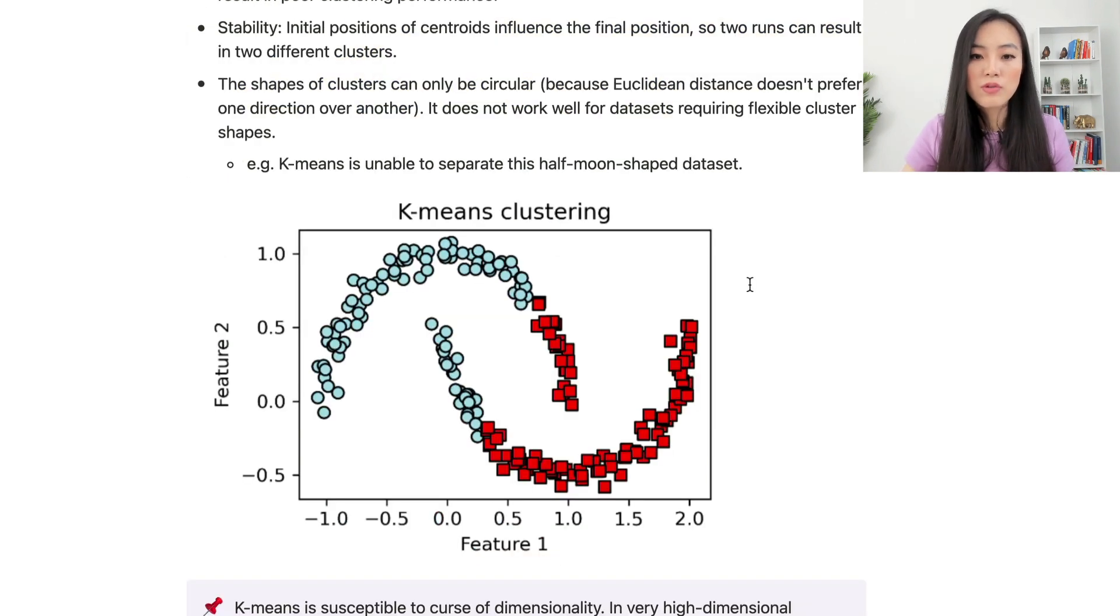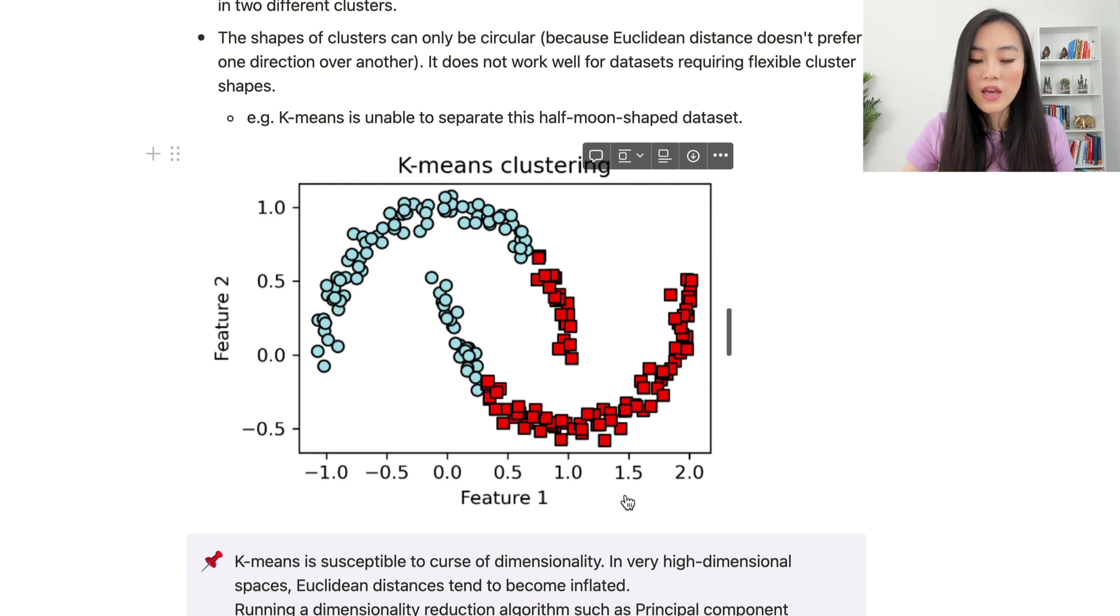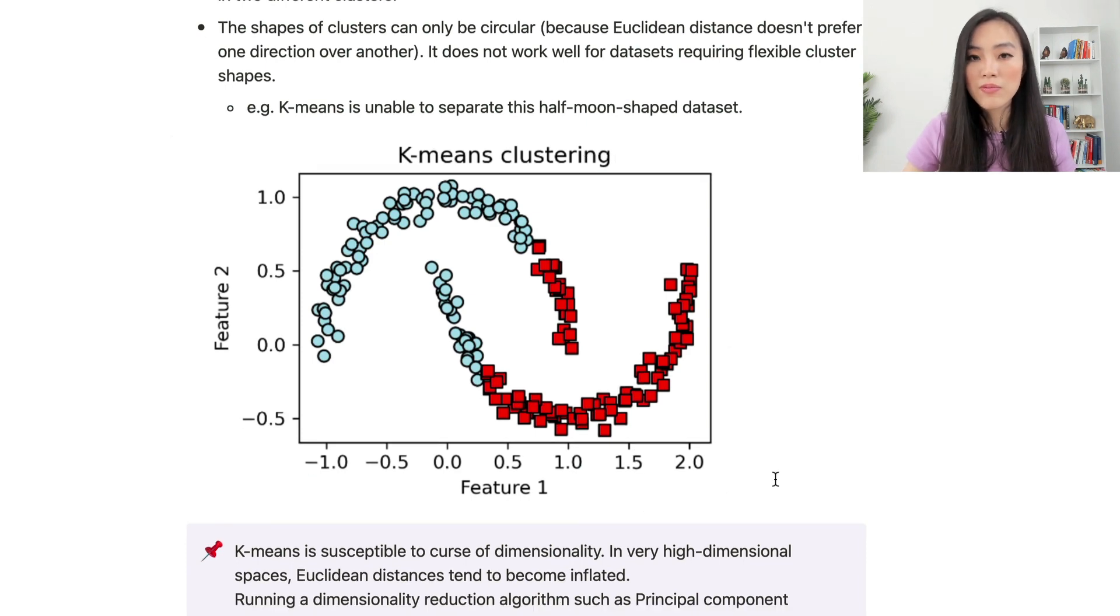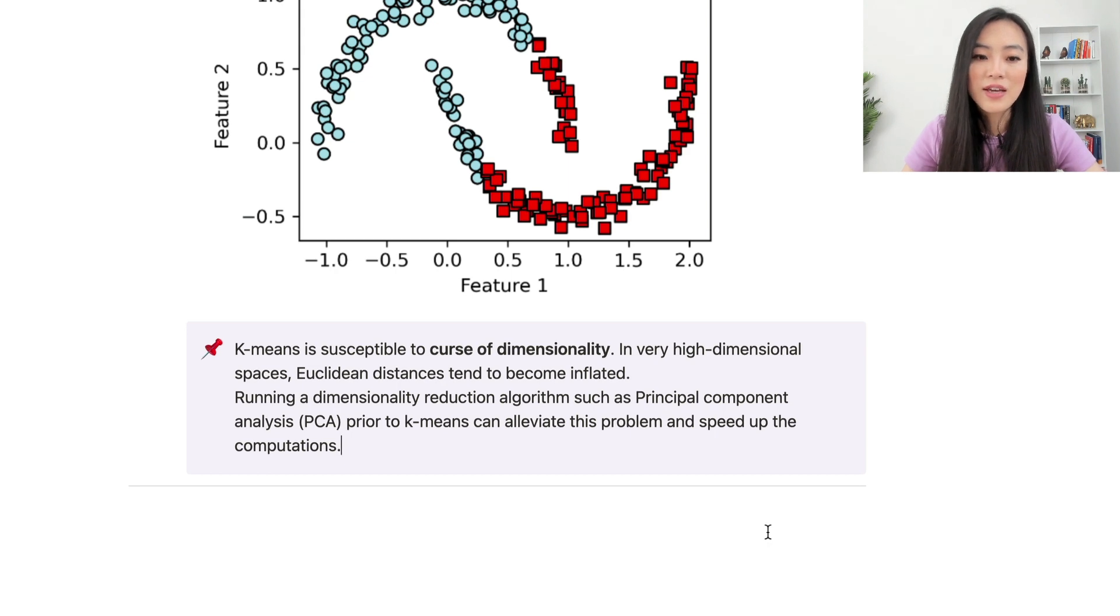Here's an example showing the result of K-means clustering on a half-moon shaped dataset. You can see that the K-means algorithm is not able to separate this half-moon shaped dataset.